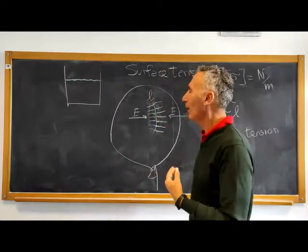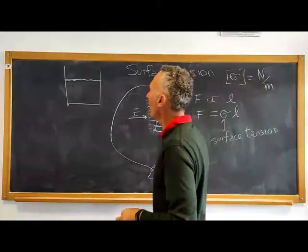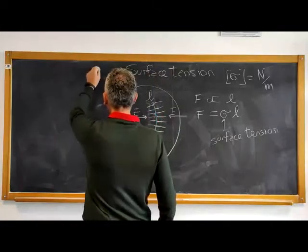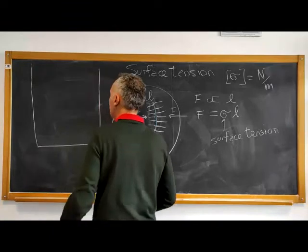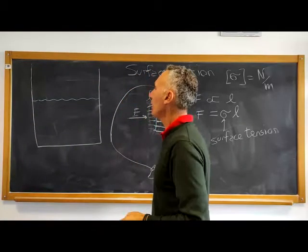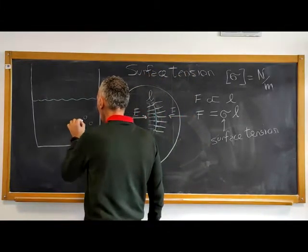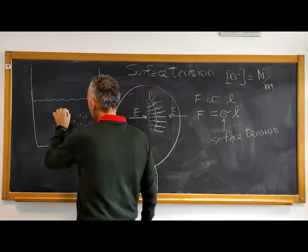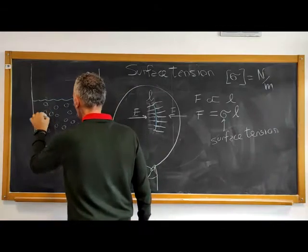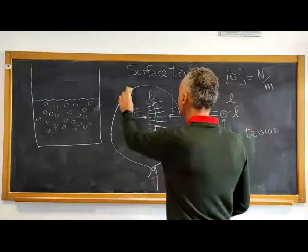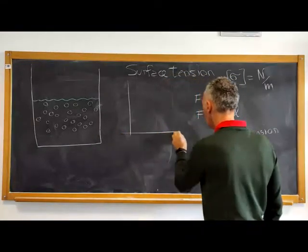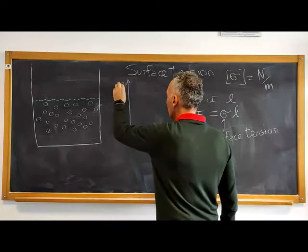Now we might ask: what is the molecular origin of surface tension? Why do we have this tension at the interface? To clarify this, let's enlarge the sketch of our glass of water and recall that water is made by molecules. Since water in the glass is a liquid, these molecules have a very specific inter-molecular distance. I resort to the Lennard-Jones curve to explain this.